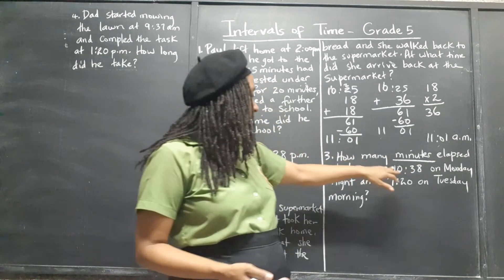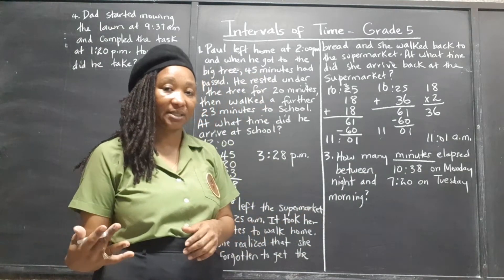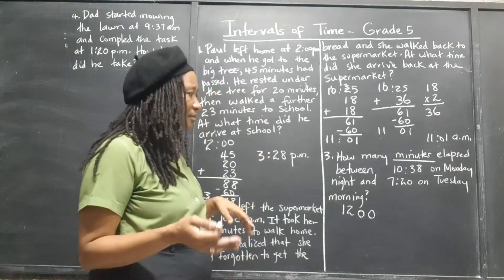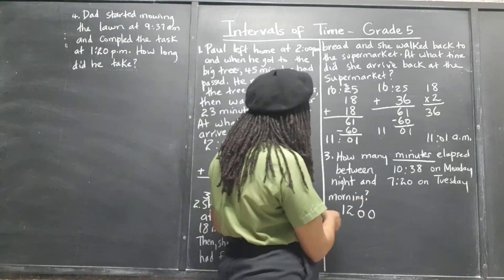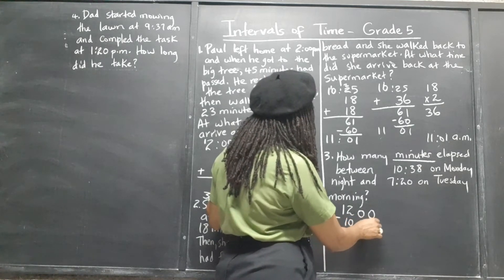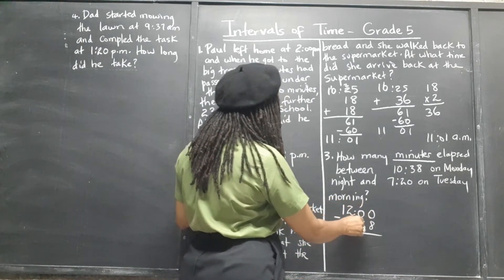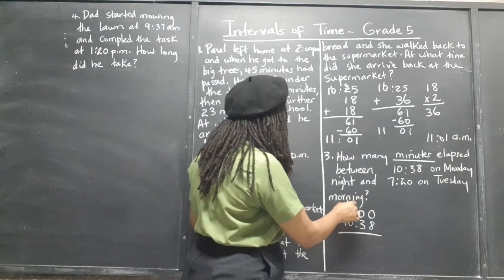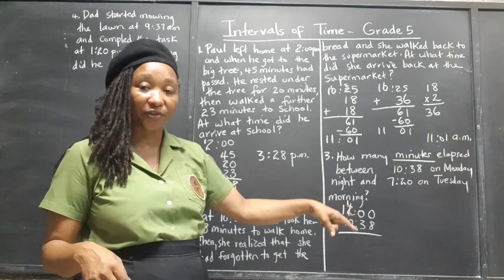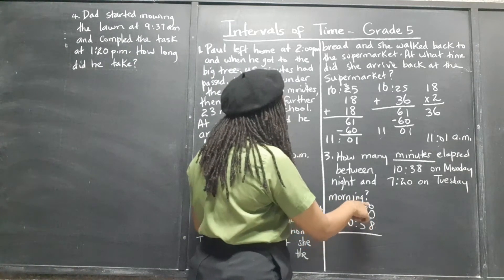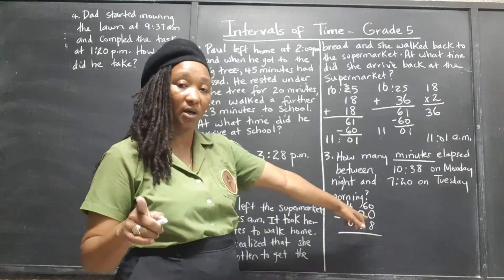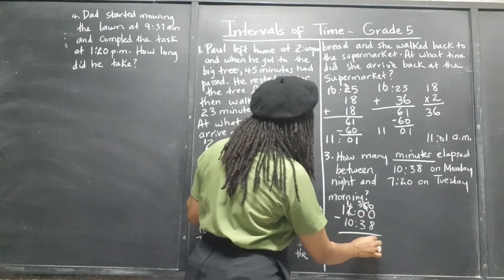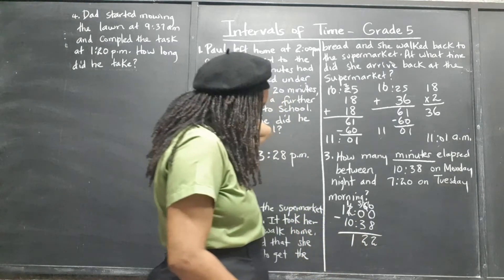How many minutes from 10:38 PM to midnight? We can work it as 12 midnight take away 10:38. That's hours and minutes. We can't take 38 from 0 minutes, so we take 1 hour out of the 12. Remember, that's hours transferring to minutes, so that's 60 minutes. We take 38 from 60, which is 22 minutes. That leaves 11 in the hours column — so it's 1 hour 22 minutes from 10:38 PM to midnight.